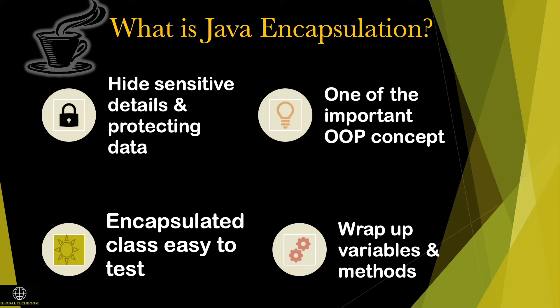Encapsulation is the process of wrapping up data and methods that operate on the data into a single unit. There is protection for direct access to the sensitive data — you can't access the data directly using an object. The data is hidden in such a way that it is protected and safe from any accidental alterations. With the help of encapsulation we can use data abstraction, which hides the implementation details of the object.